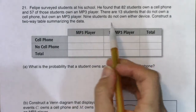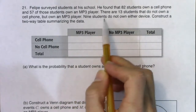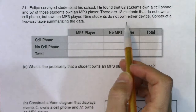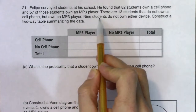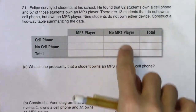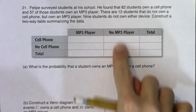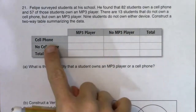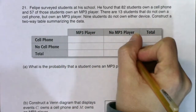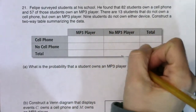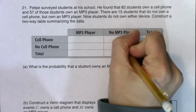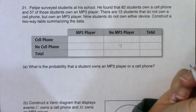I like to start with the 'neither' and then potentially the 'both.' It says nine students do not own either device, so they do not own an MP3 player and they do not own a cell phone. Where that row and that column overlap — right here in this cell — that's got to be nine.